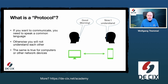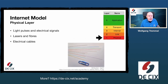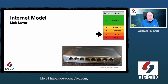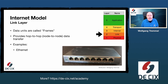It's not just one protocol. If you have watched the previous videos, you know that there is also Ethernet and also the physical layer. They all build the protocol stack — multiple protocols building upon each other. We start very low at the physical layer, where we have electrical cables, fibers, and light pulses, making up the physical part of communication. One layer above, we have the link layer, where data units are called frames. The purpose of the link layer is to provide hop-to-hop, node-to-node data transfer — for example, from my laptop here to my Fritzbox downstairs. An example of a protocol on the link layer is, of course, Ethernet.